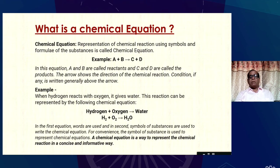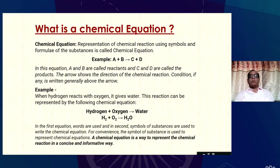For example, when hydrogen reacts with oxygen, it gives water. The reaction can be represented by the chemical equation: hydrogen + oxygen → water. In the first form, words are used; in the second, symbols of the substances are used to write the chemical equation. For convenience, the symbol of the substance is used to represent the chemical equation. A chemical equation is a way to represent the chemical reaction in a concise and informative way.